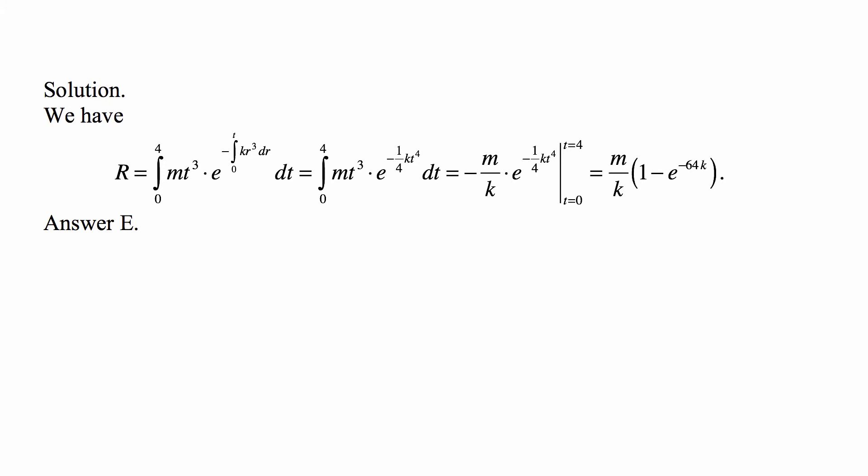So we evaluate that function from 0 to 4, and we obtain m over k times (1 minus e to the minus 64k), which is answer E.